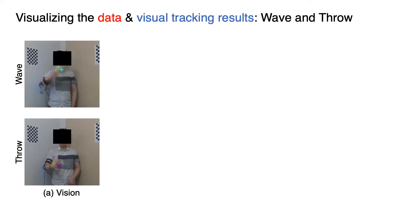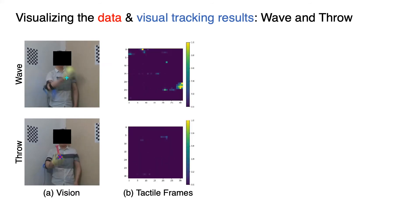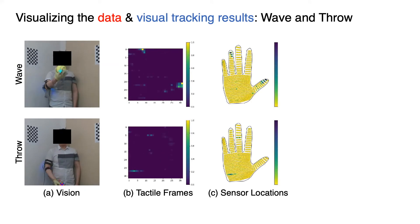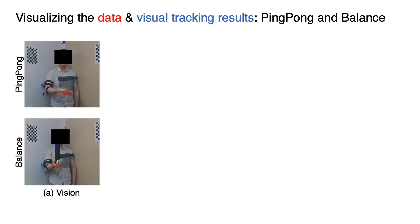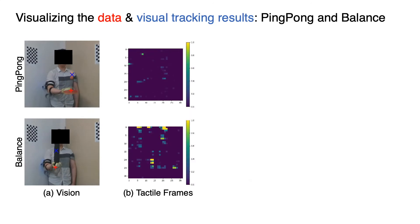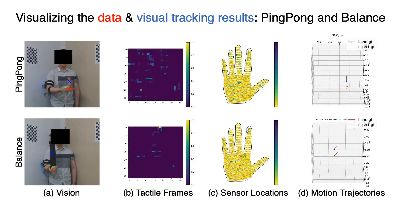Here, we show the recorded information of the wave and throw activities. From left to right, we illustrate the synchronized vision images, the tactile frames, the corresponding sensor locations, and the motion trajectories. Here is the same set of recorded information for playing ping-pong and balancing an umbrella.